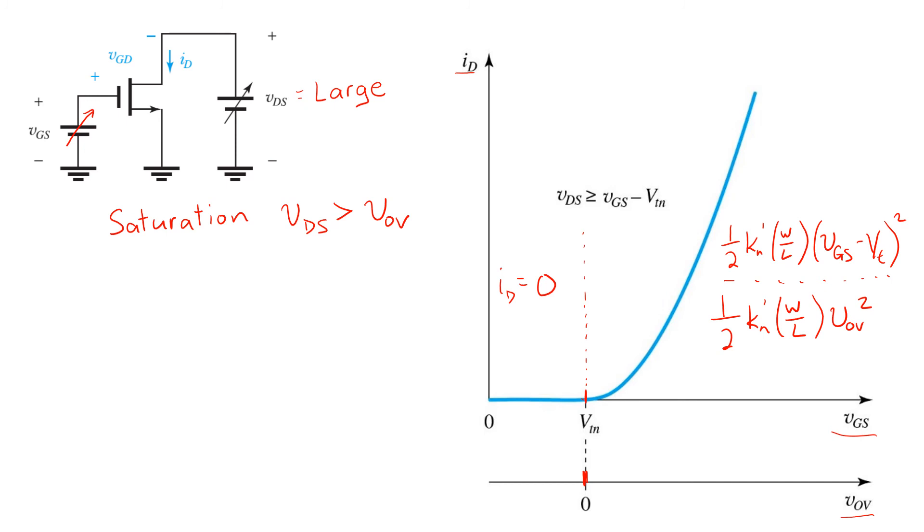Now MOS transistors can be engineered to have a variety of threshold voltages all the way from a few volts all the way down to near zero. And in fact, even negative threshold voltages are possible. Such devices are no longer enhancement mode devices, but they do exist. Essentially, even for zero VGS, there's an inverted channel. We don't spend much time focusing on those devices in this course.